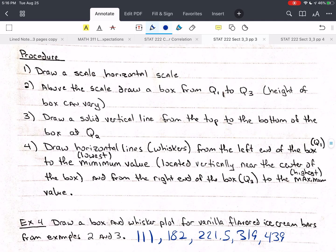So what's the procedure? First, we're going to draw a scale, a horizontal scale. Now, you can do this horizontally or vertically. The book has the vertical information, but I personally like the horizontal scale better. I'll show you why, but both are correct. So you draw a horizontal scale. Above the scale, you're going to draw the box from Q1 to Q3. And the height of the box can vary, so you just make it what looks nice for you.